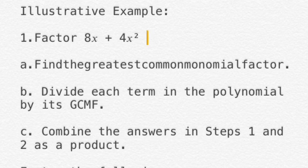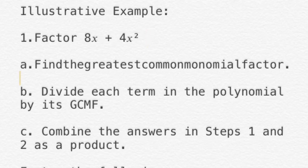Factor 8x plus 4x squared. Step 1: find the Greatest Common Monomial Factor. We have 8 and 4 — the GCF of these two numbers is 4. Then between x and x squared, the GCF is x. So our Greatest Common Monomial Factor is 4x.